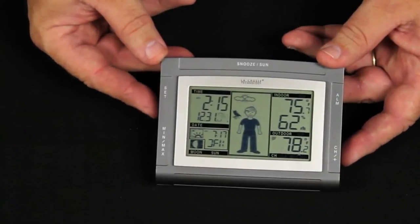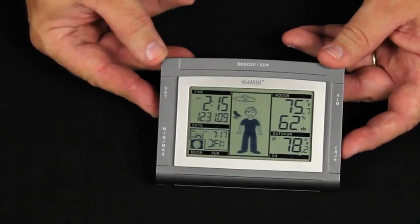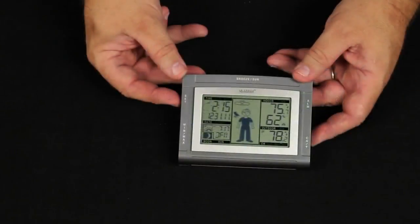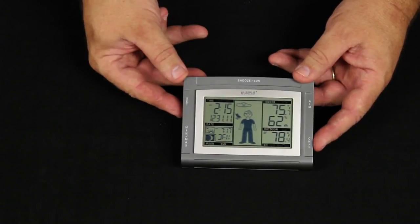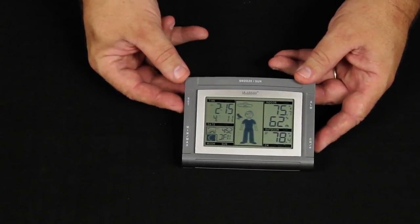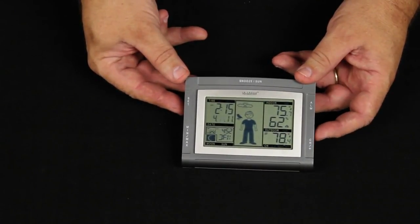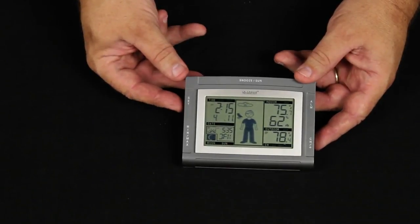Set button once again allows me to change the year. It's at 2004. Let's take it to 2011 so we're accurate. Pressing the set button once again flashes the month. The channel plus button will adjust that. We're going to make it April. Pressing the set button once again flashes the day. It's showing the 31st. Let's make it April 1st. April Fool's Day.